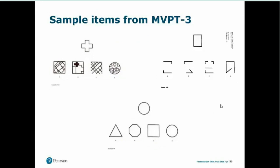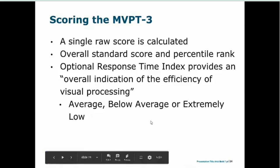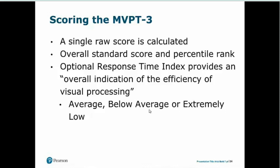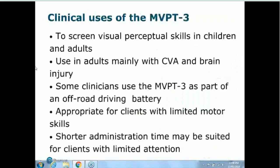To score the MVPT3, a single raw score is calculated based on all items completed, which is then converted to an overall standard score and percentile rank. There is also an optional response time index, which gives an overall indication of the efficiency of visual processing. Scores can be classified as average, below average, or extremely low — so we cannot get an above-average indication. The record form is fairly straightforward, using a mean of 100 and standard deviation of 15.